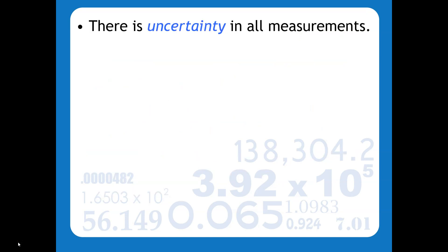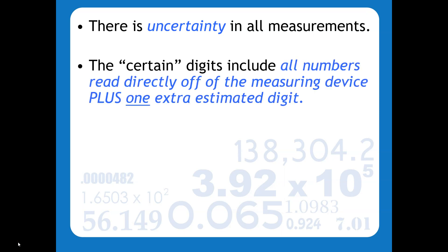Whenever we make measurements there is always going to be a certain degree of uncertainty, and the reason why is because we have to read every digit that we can off of the measuring device and then we always have to estimate one more digit.